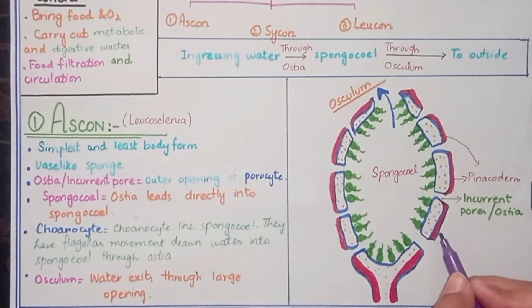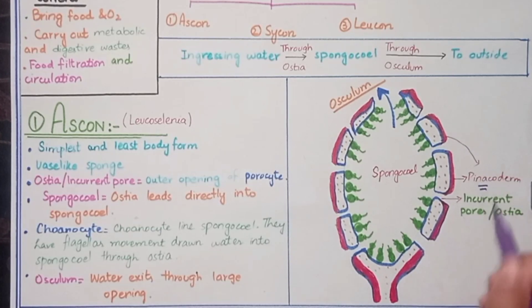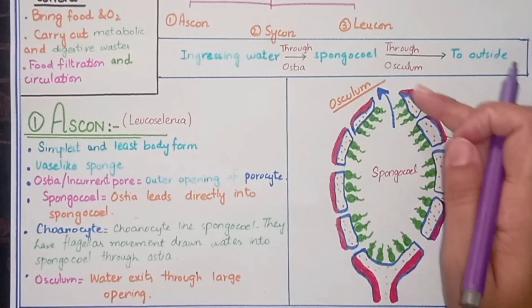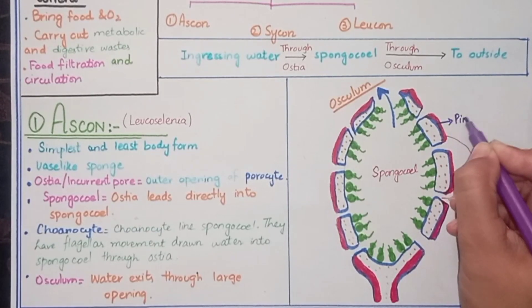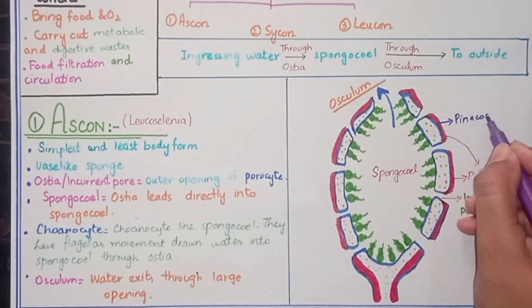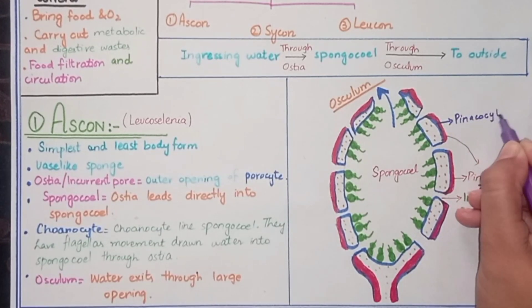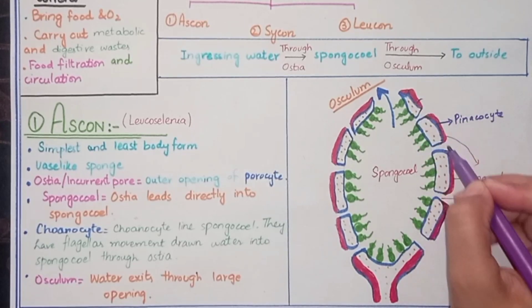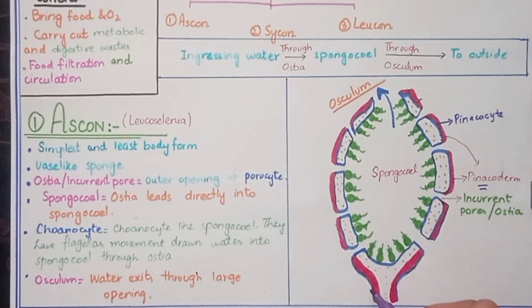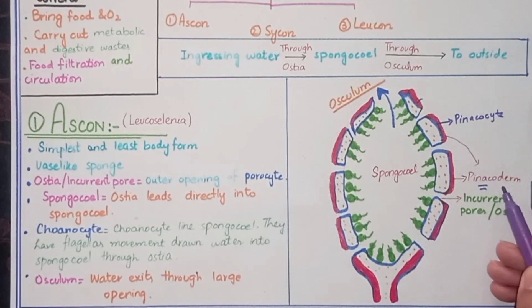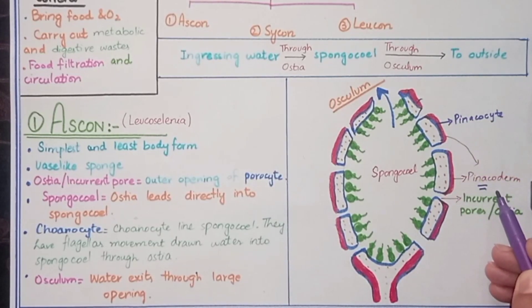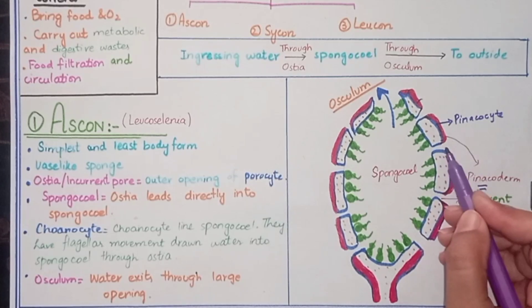The Ascon body form is vase-shaped. The first outer layer is known as the Pinacoderm. This complete layer is formed by cells which are known as Pinacocytes. These cells collectively form the layer shown as the Pinacoderm.